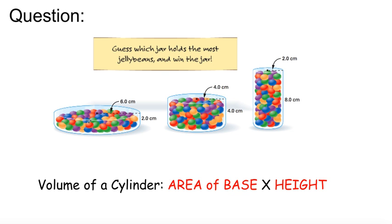It doesn't ask you how many jelly beans there are — it's which one holds the most jelly beans. Whichever has the most volume will have the most jelly beans in it. The volume of a cylinder is the area of the base times the height. You've got to find the area of the base first, and then multiply it by the height.